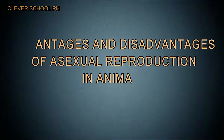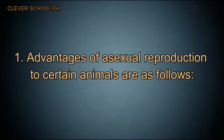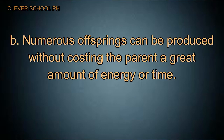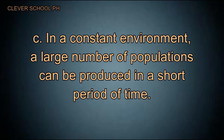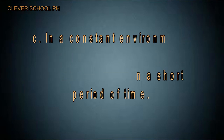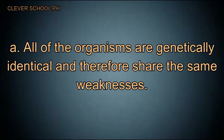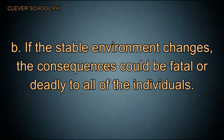Advantages and disadvantages of asexual reproduction in animals. Advantages include: animals that remain alone in one particular area can propagate their generation in the absence of a mate; numerous offspring can be produced without costing the parent a great amount of energy or time; and in a constant environment, a large number of individuals can be produced in a short period of time. Disadvantages include: all organisms are genetically identical and share the same weaknesses; if the stable environment changes, the consequences could be fatal to all individuals.